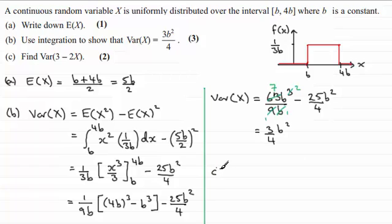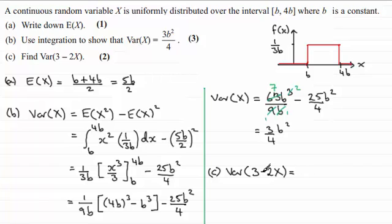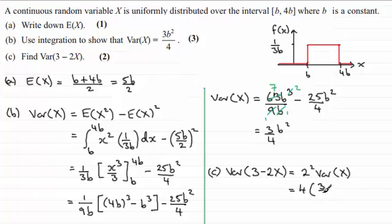Now when it comes to part c, where we've got to work out the variance of 3 minus 2x, we pick up on the fact that the variance of a constant is 0. When we've got a negative coefficient it becomes positive, so we get 2 squared times the variance of the random variable x — a result we should be familiar with. This is going to be 4 times the variance of x, which we've just seen is 3 quarters b squared. Multiplying this out, we end up with 3b squared.